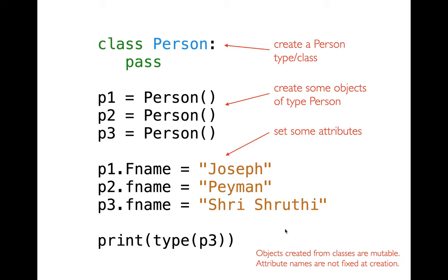There are lots of advantages of doing it this way, and we're going to be getting into those. Maybe a small advantage is right here: if I print the type of this, it's not going to say dictionary. It's going to say that p3 is referring to a person object. That's just a very small benefit — we're going to see many more.